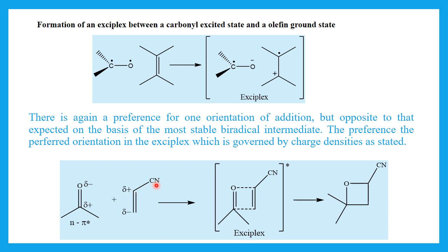The preferred orientation in the exciplex is governed by charge density. The carbonyl oxygen is partial negative, and in the alkene the carbon bearing the electron-withdrawing cyano group is partial positive. So the partial negative oxygen reacts to form a bond with the partial positive carbon, and this exciplex is converted into the final product. It is not possible for the partial negative oxygen to react with the other partial negative carbon to form another isomer.